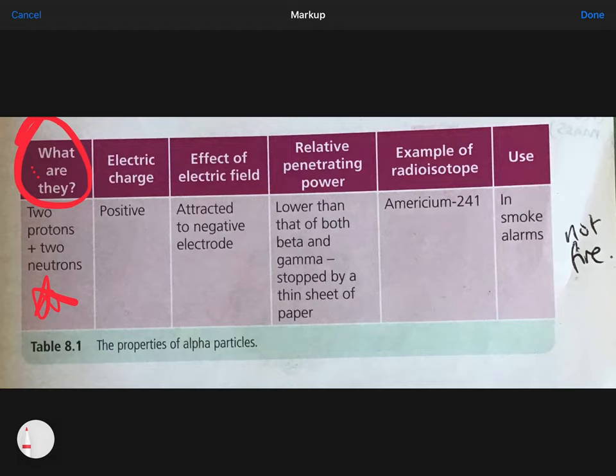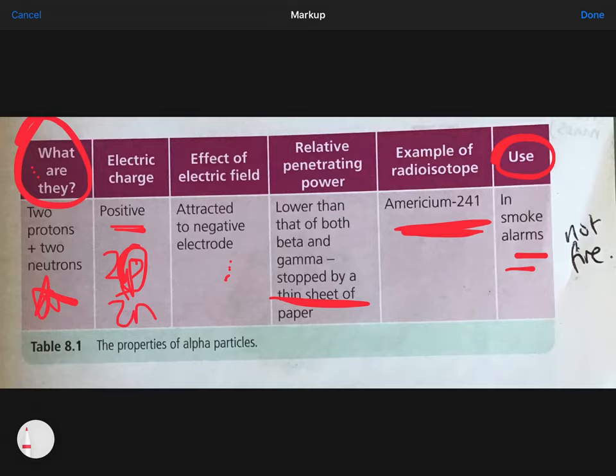If you are asked for properties, you're going to say alpha particles are positively charged because there are two protons and two neutrons, and protons are positive. If they're positively charged, they'll be attracted to the negative electrode. They have the lowest penetrating power, so they are stopped by a thin sheet of paper. An example is Americanum 241, and a use is smoke detectors.